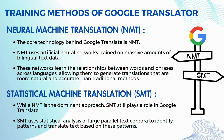Now we'll talk about SMT, Statistical Machine Translation. Although NMT is currently the prevailing method, SMT continues to have significance within Google Translate. SMT relies on statistical analysis of extensive parallel text collections to recognize patterns and perform translation accordingly.